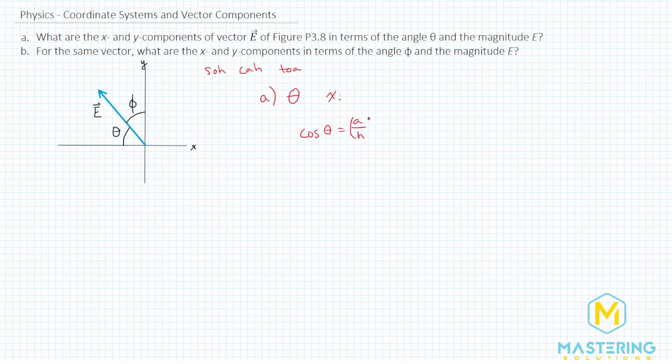To isolate a, we'll multiply both sides of the equation by the hypotenuse. So this is essentially the answer right here, but what is h? In this case, h is the vector E. So we have negative vector E times the cosine of theta as the x component.